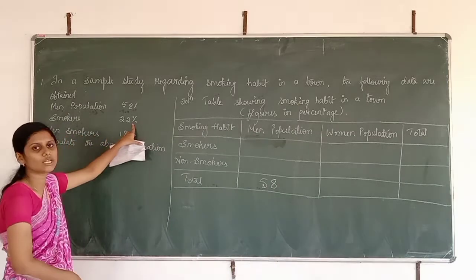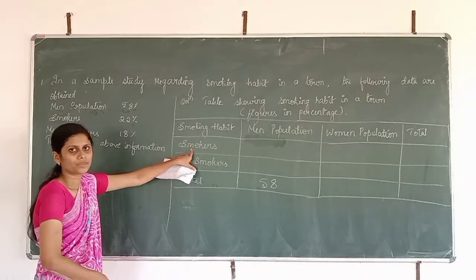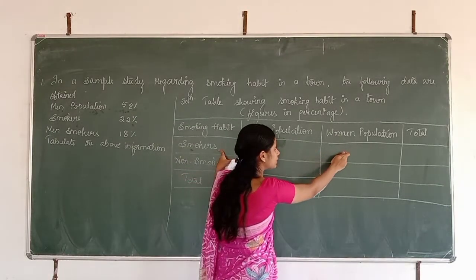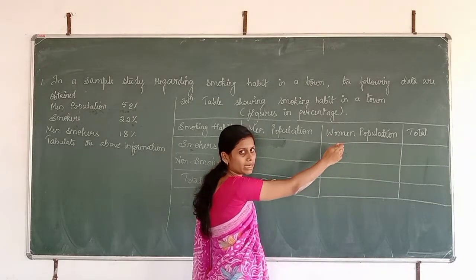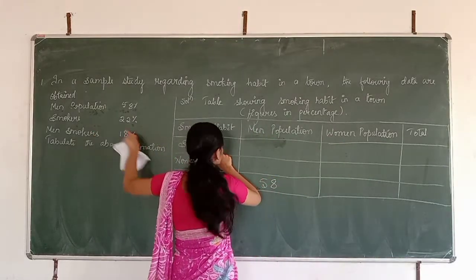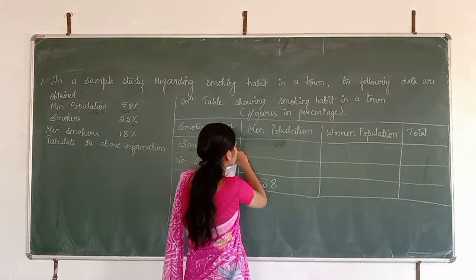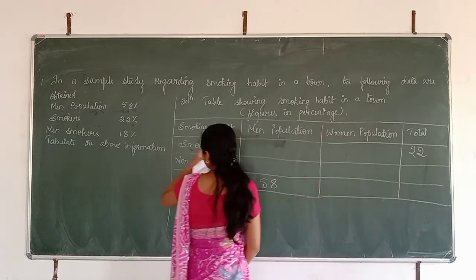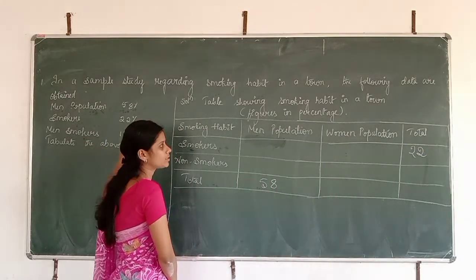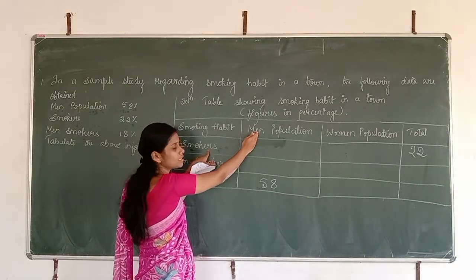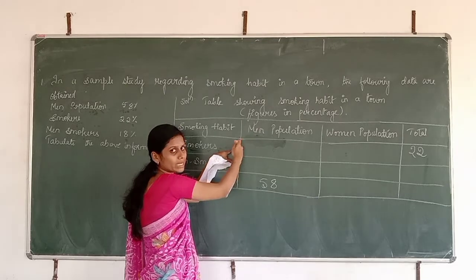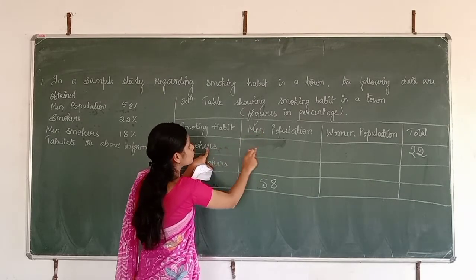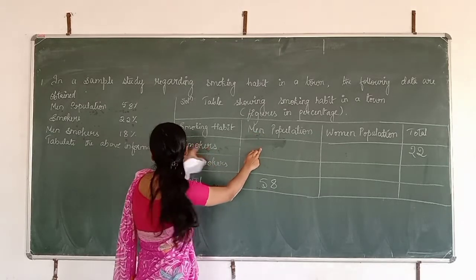Next, smokers is 22%. The information is for total smokers, not specified as men or women, so we write 22 in the total column of the smokers row. Next, men smokers is 18% — this is where the men column and smokers row intersect, so we write 18 in that cell.